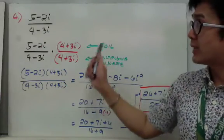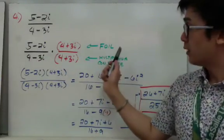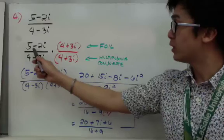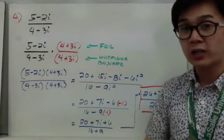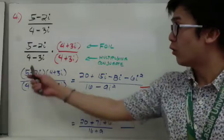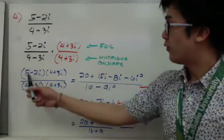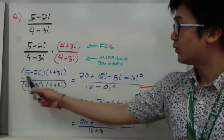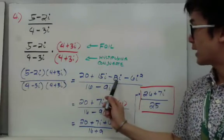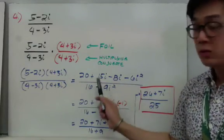The difference between example 4 and example 3 is that the numerator needs to be FOILed, while the denominator can use the shortcut because it's the conjugate. Don't make the mistake of just multiplying 5 times 4 and 2i times 3i — the shortcut only works for the denominator. So FOILing 5 minus 2i times 4 plus 3i: 5 times 4 is 20, 5 times 3i is 15i, negative 2i times 4 is negative 8i, and negative 2i times 3i is negative 6i squared.